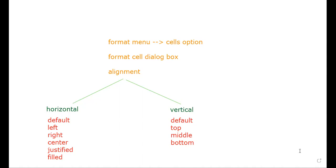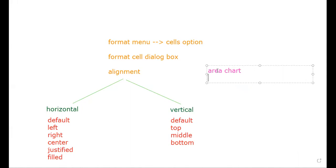The types of charts available in Calc include: line chart, area chart, column chart, bar chart, and XY chart. The area chart emphasizes the magnitude of change over time. The column chart is used for comparisons among items — categories are organized horizontally on the X axis and values are organized vertically on the Y axis.